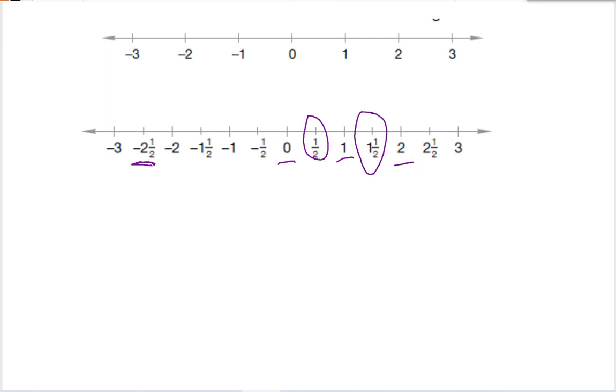It works the other way as well. Between 0 and negative 1 is negative 1 half, and between negative 1 and negative 2 is negative 1 and 1 half.